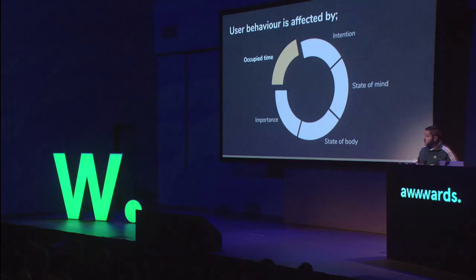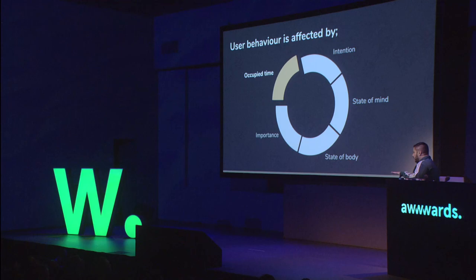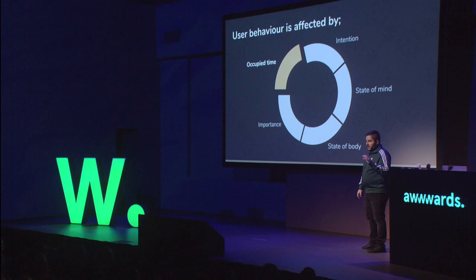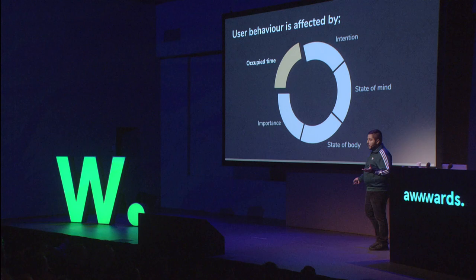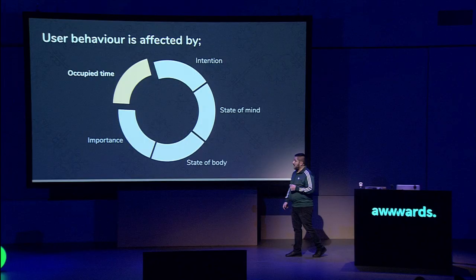User behavior is affected by many different things. Based on research I've been involved in: occupied time, intention, state of mind, state of body. Importance is a weird one — whenever you do a study on speed, you slow down an experience to find the breaking point where people abandon, and sometimes after 20 minutes people are still using the site. If you're in a foreign country trying to get a map to load, you're going to wait. If you're looking for a hospital address, you're going to wait. It's important. That's a bad thing to depend on because users will never forget a slow, anxious experience.